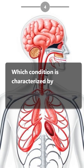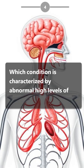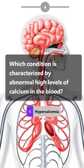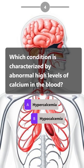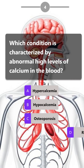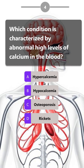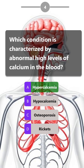Which condition is characterized by abnormally high levels of calcium in the blood? Hypercalcemia, hypocalcemia, osteoporosis, rickets. Answer is: hypercalcemia.